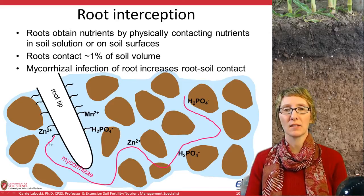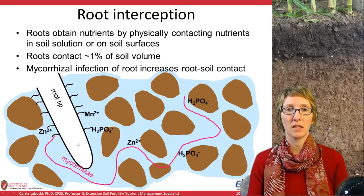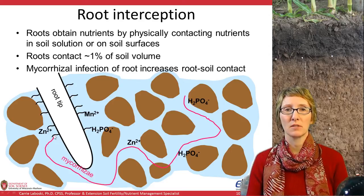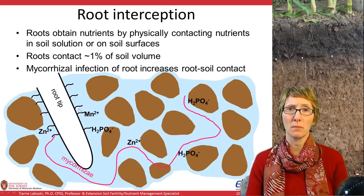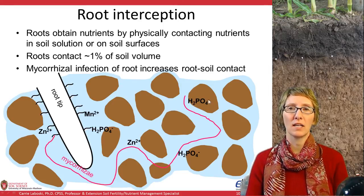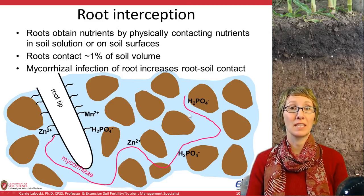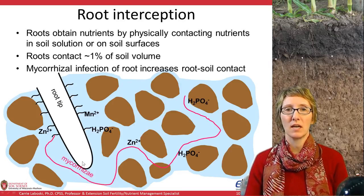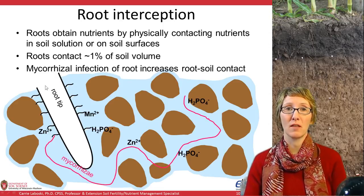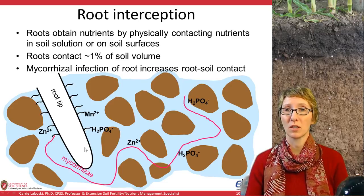Here I've also drawn in pink a mycorrhizae — a fungus that infects the root tip, actually infecting a root hair as drawn. It effectively extends the area or volume of soil that the root is exploring, because now phosphate that's really far away from the root tip can be reached where the mycorrhizae is growing. The phosphate can be taken into the mycorrhizae structure and then ultimately move back into the root tip. The mycorrhizae help the plant take up nutrients, and the plant provides carbohydrates to the mycorrhizae so that they can live.